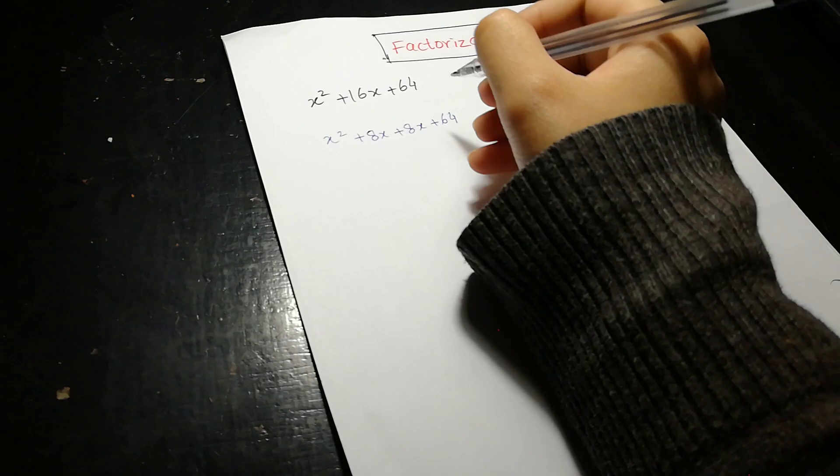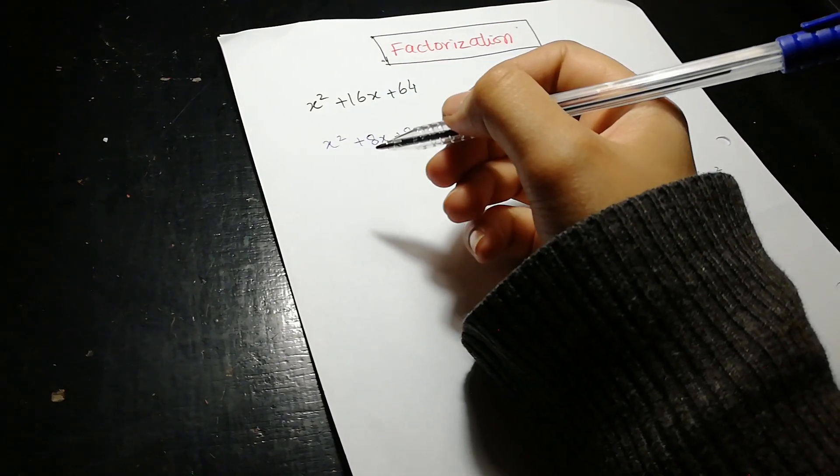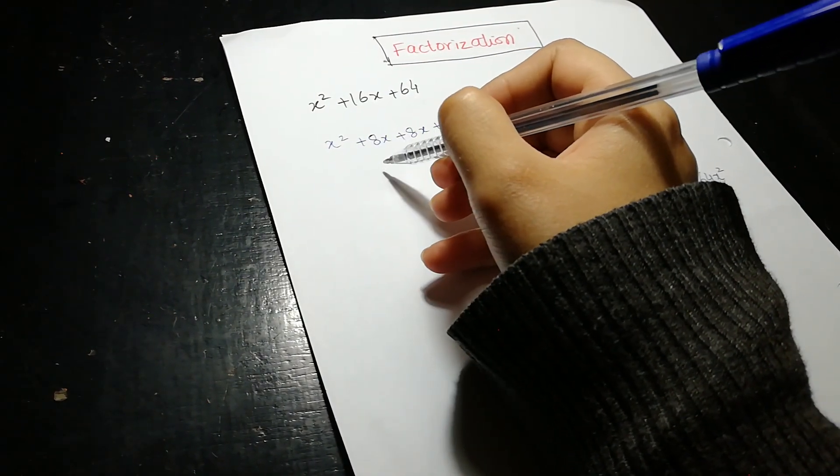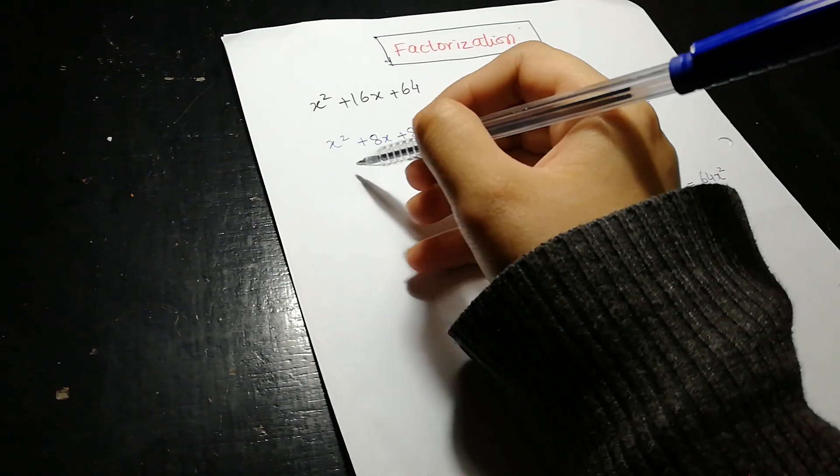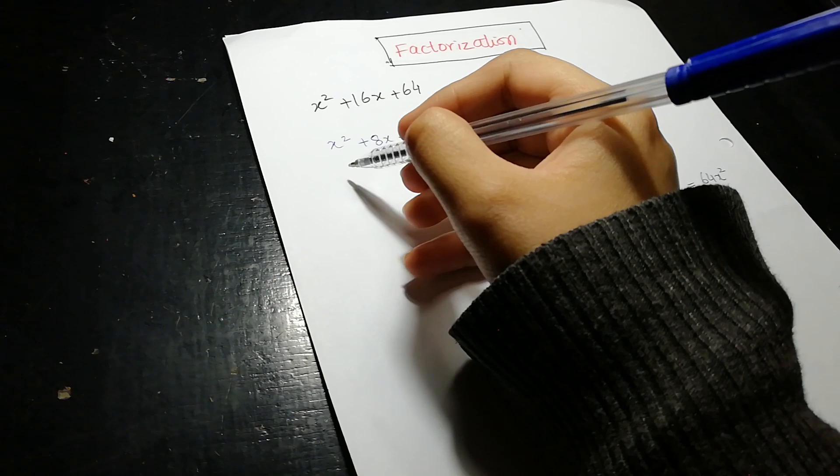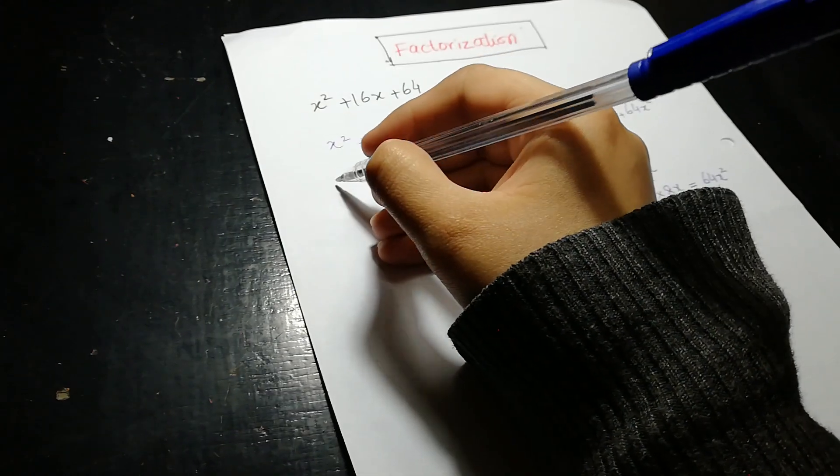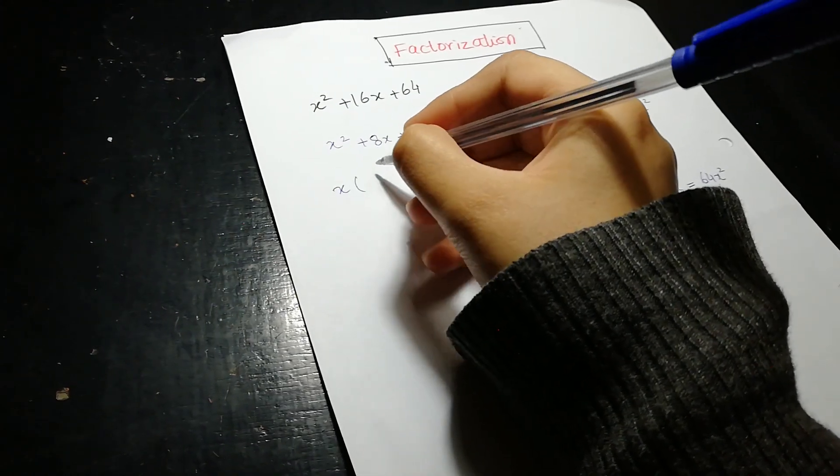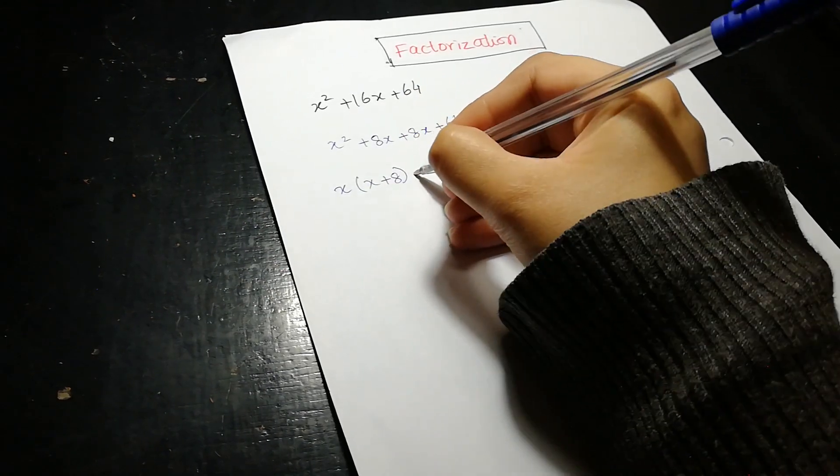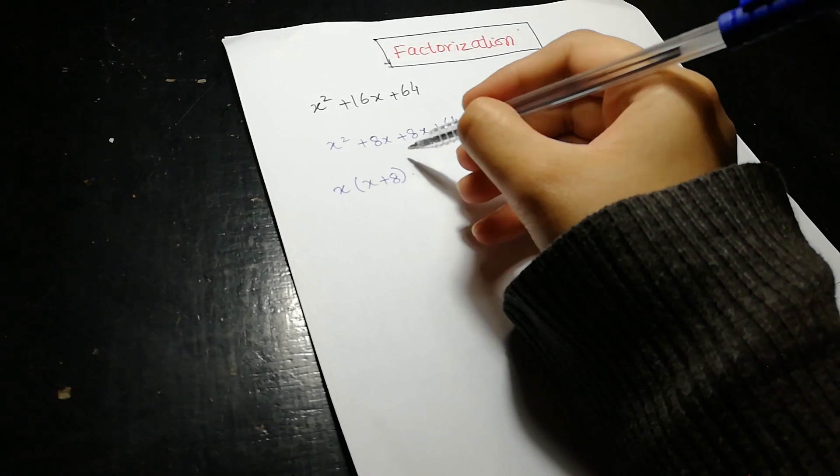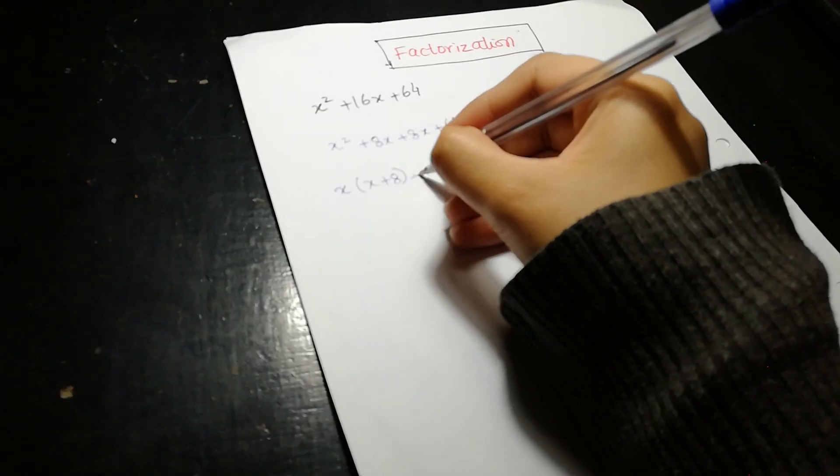The next step is we have to take the common from the first two terms and then we take common from the next two terms. As we see, x is common in the first two terms, so we write x here and the remaining terms are x plus 8. These two terms are positive so we write plus here.